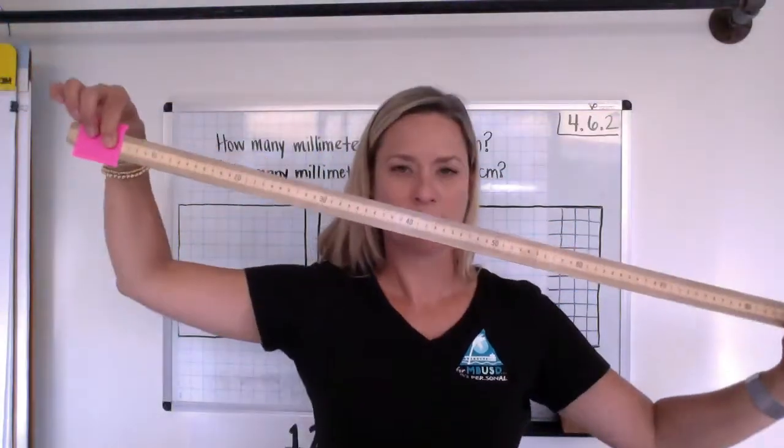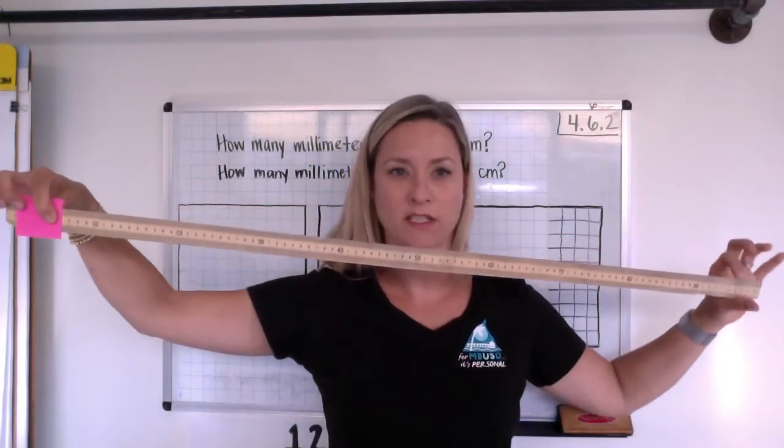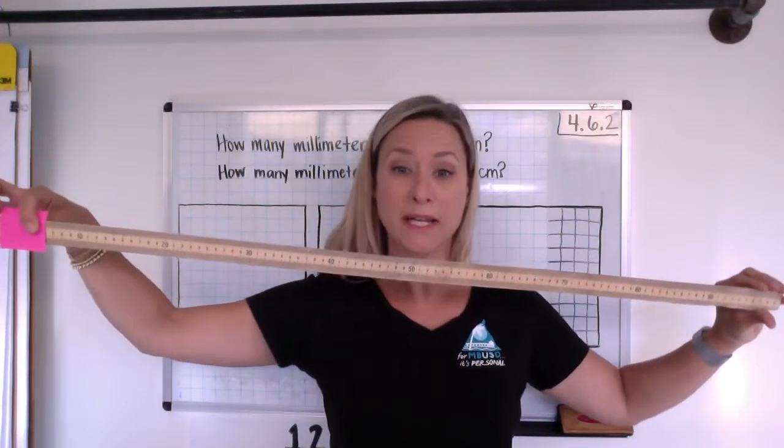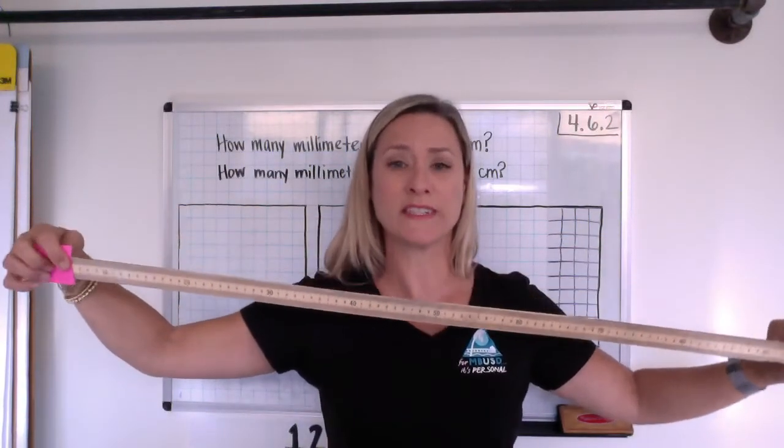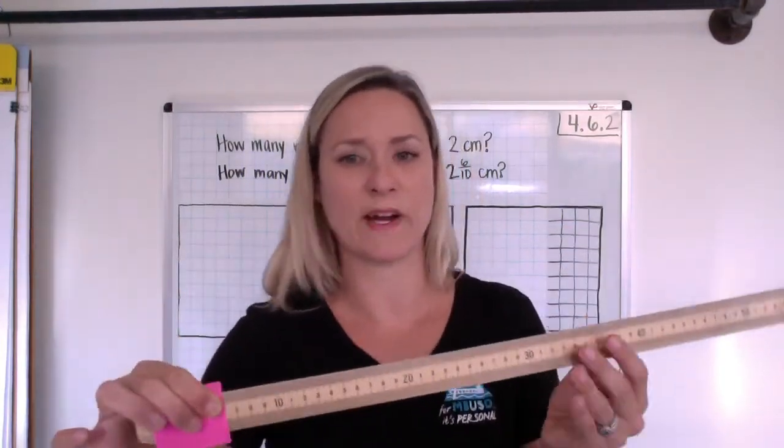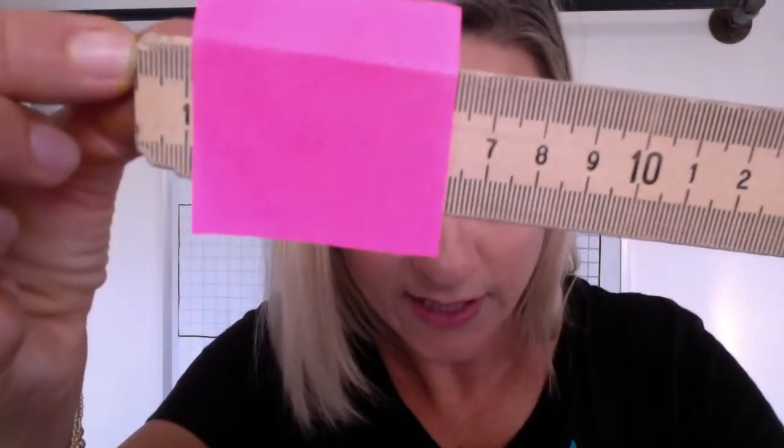So, inside of a centimeter are millimeters. Now, this whole thing has 100 centimeters, but it also has millimeters on it. But those are even smaller. Those are like a strand of hair. Like one strand of hair. So these tiny little measurement marks right here are measuring millimeters.